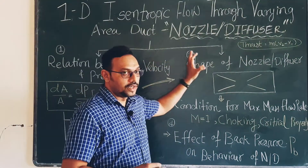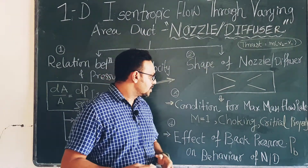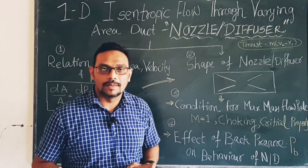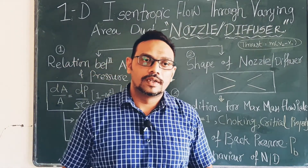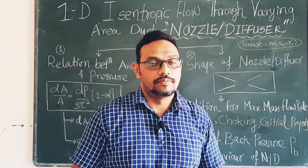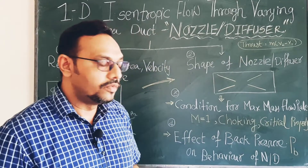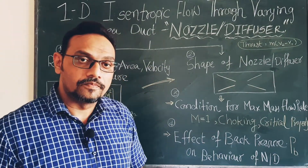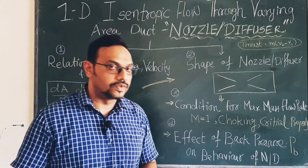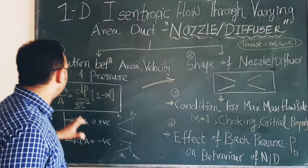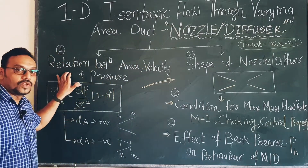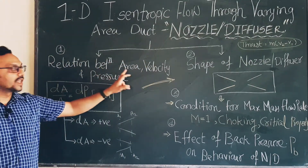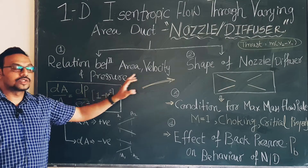To understand the behavior of nozzles and diffusers, today we explain four very fundamental and important theories. Based on these theories we can understand nozzle and diffuser behavior. The first theory is the relation between area, velocity, and pressure.